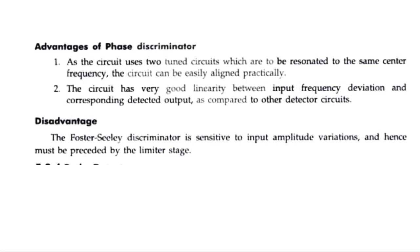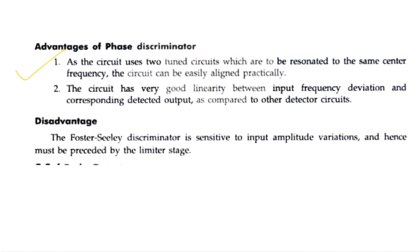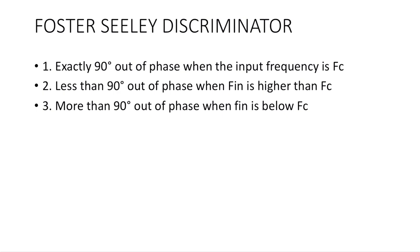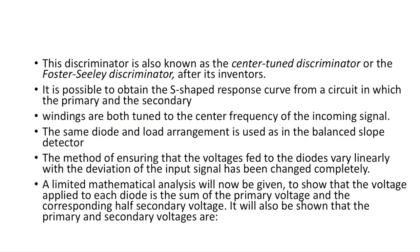The advantages of the Foster Seeley discriminator are: the circuit uses tuned circuits which are resonated to the same center frequency, the circuit can be easily aligned practically, and the circuit has good linearity between input frequency deviation and the corresponding detected output. The disadvantage is that it is very sensitive to input amplitude variations, and hence a limiter stage must be used. The three phase conditions are exactly 90 degrees, less than 90 degrees, and more than 90 degrees.